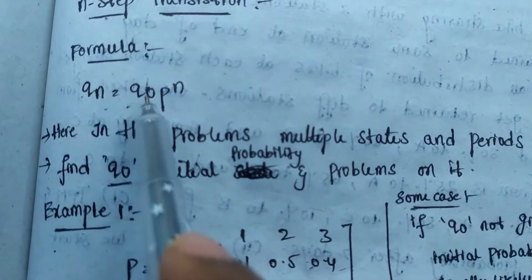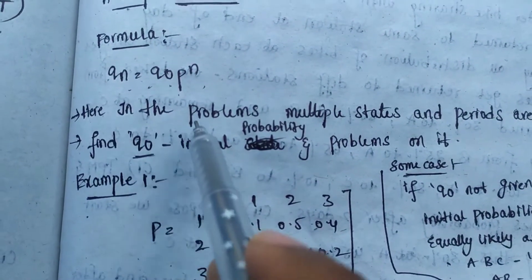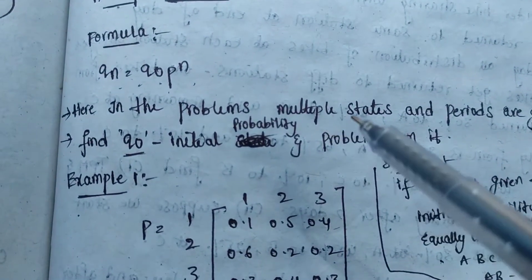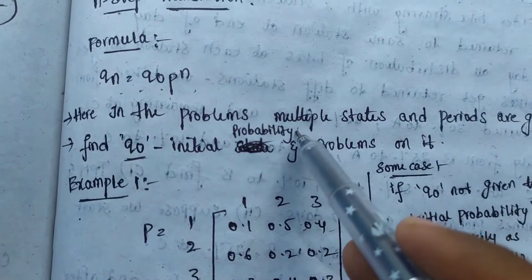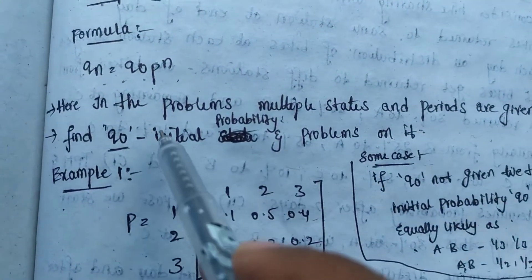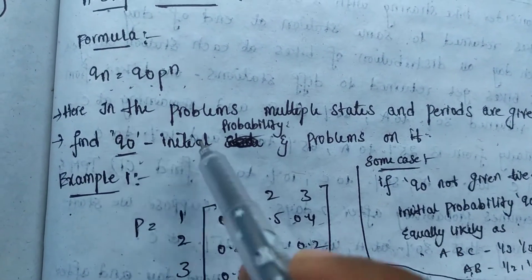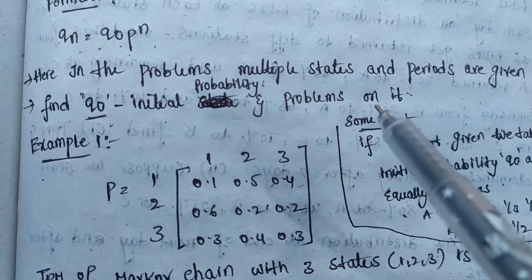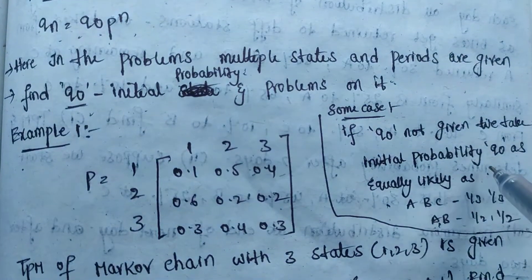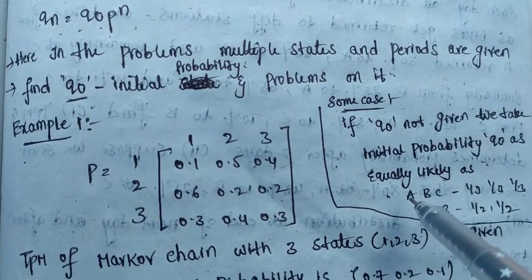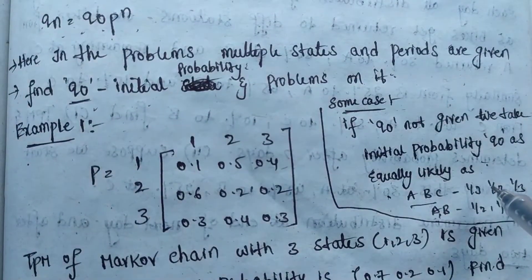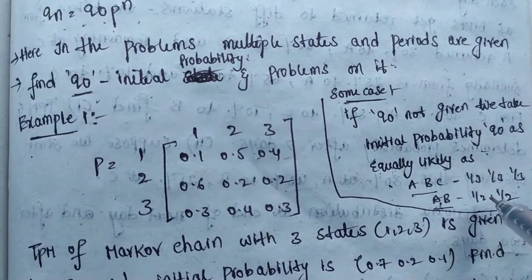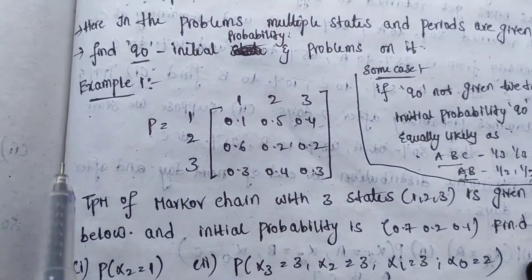The important formula in Markov chain is: q(n) = q(0) * P^n. In problems, we can identify whether a given problem is a Markov chain by the multiple states and periods given. We find the initial probability q(0). If q(0) is not given in the question, we take it as equally likely — for 3 states, q(0) = [1/3, 1/3, 1/3]; for 2 states, q(0) = [1/2, 1/2].